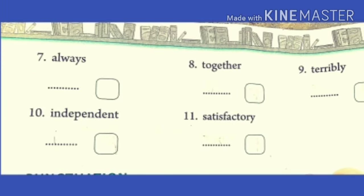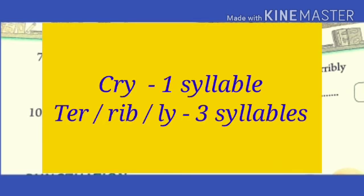Children, sometimes Y makes a vowel sound. For example, cry, terribly. Here, Y is making vowel sound of I. So cry has one syllable and terribly has three syllables.